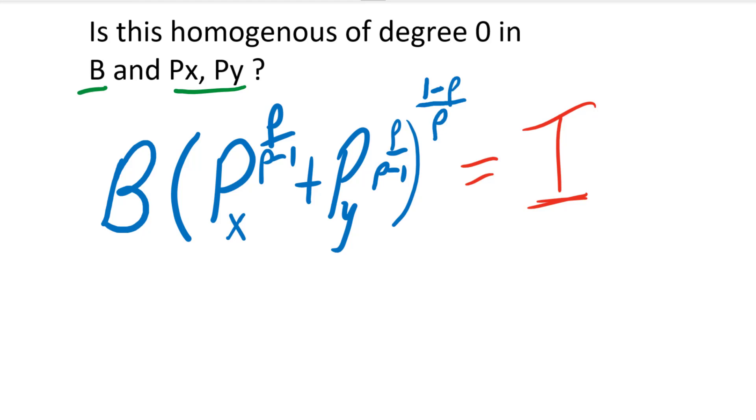And so what that means is if we were to multiply the budget and the prices by the same constant, it doesn't affect the outcome of this function at all. It would cancel. So what we need to do is bring in a constant here. Let's call this constant D.